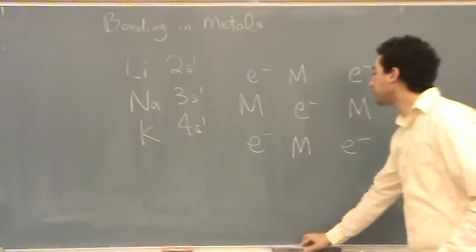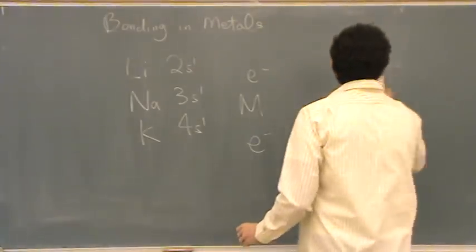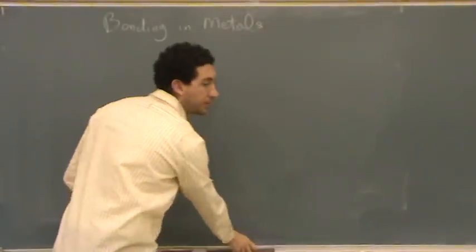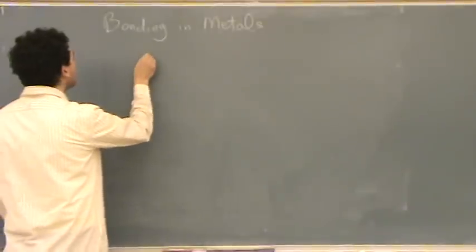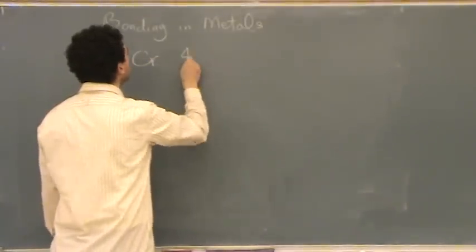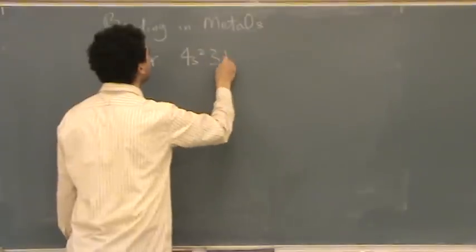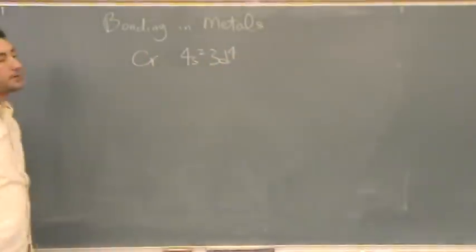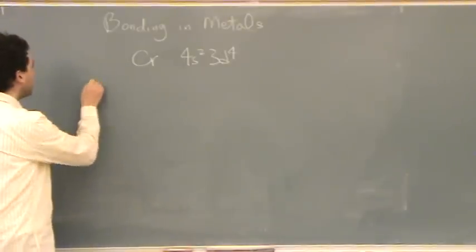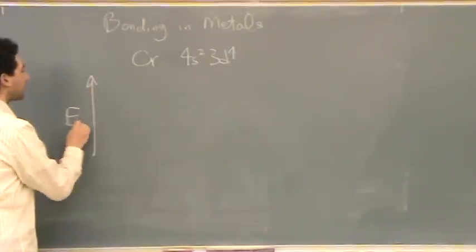Another way to explain this is what's called Band Theory, and this is from MO theory. Let's take the example of chromium, and just for simplicity, let's just say it's 4s2 3d4 instead of 4s1 3d5. We'll just use this. So if we draw our energy diagram,